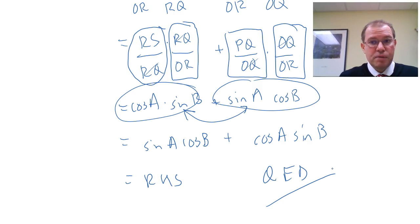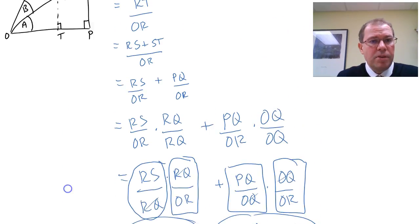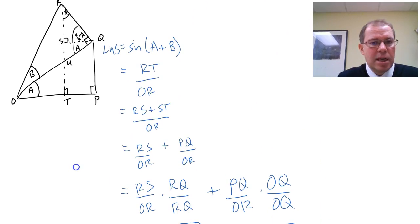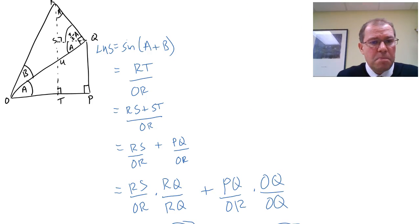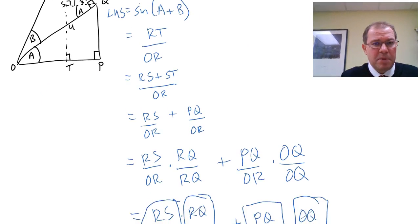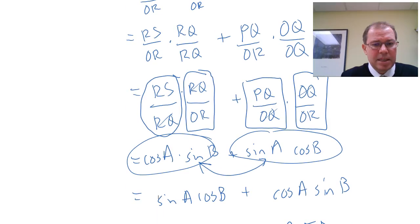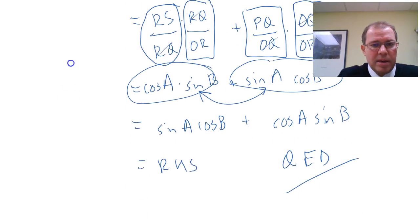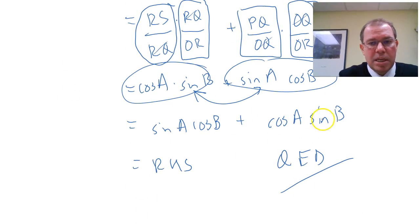So there we've got a nice neat proof of sine(A+B) equals sine(A)cos(B) plus cos(A)sine(B). So now, one thing to note is that actually, this is how I did the proof initially, but actually if you work backwards, it might be easier than the way I did it, because imagine working the proof backwards. So starting with the right-hand side, starting with sine(A)cos(B) plus cos(A)sine(B), and writing these ratios out.